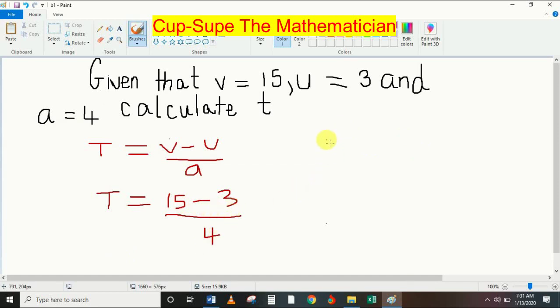So T equals, 3 from 15 leaves 12 over 4. But you realize that the denominator is smaller than the numerator. This is considered an improper fraction. So I'm going to break this down. 4 into 12 goes 3 times.